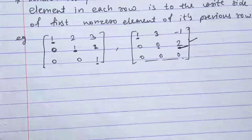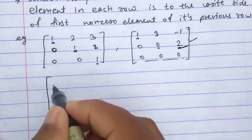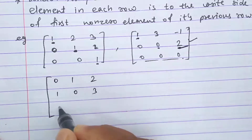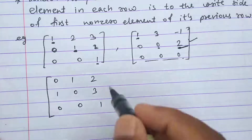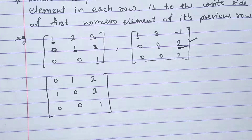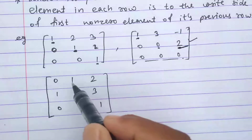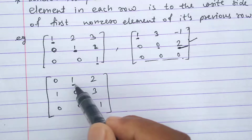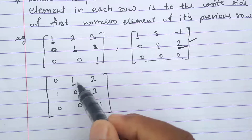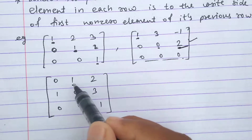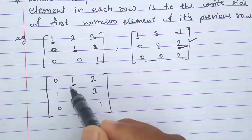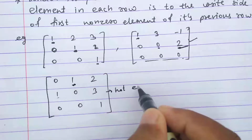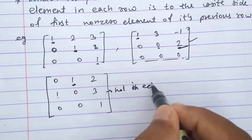Now consider the matrix [0, 1, 2; 1, 0, 3; 0, 0, 1]. In the first row, the first non-zero element is in column 2. In the second row, the first non-zero element is in column 1, which is to the left — not to the right. So this matrix is not in echelon form.